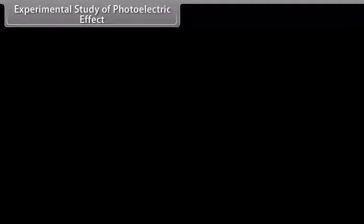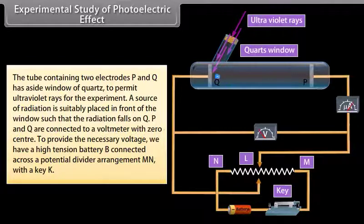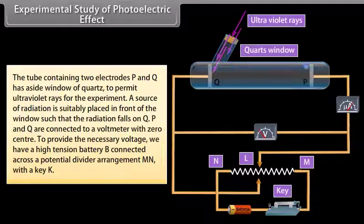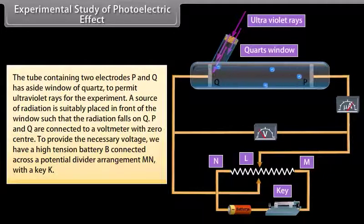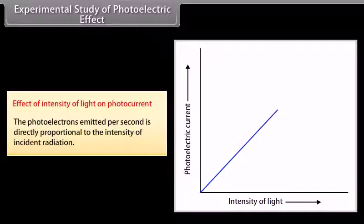The experimental apparatus consists of a tube with two electrodes P and Q, with a side window to permit ultraviolet rays. Radiation falls on Q, and P and Q are connected to a voltmeter with zero center. A high-tension battery B is connected via a potential divider MN with key K to provide the necessary voltage. The number of photoelectrons emitted per second is directly proportional to the intensity of incident radiation.